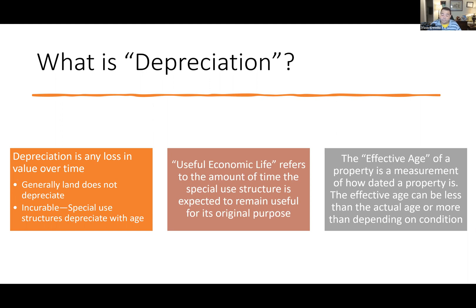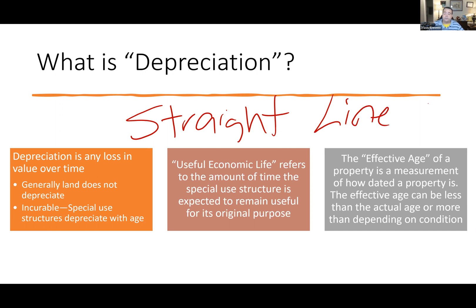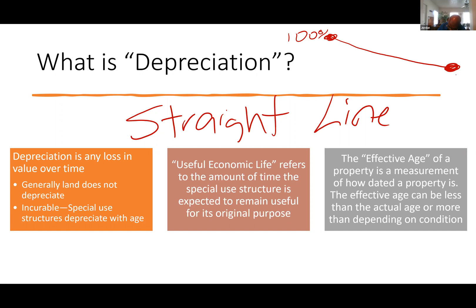Depreciation is based on two factors: the condition of the property and the age of the property. Both have a dramatic impact on depreciation. The kind of depreciation we use is called straight-line depreciation. We assume the value of the structure starts at 100% on day one and over time goes straight down to zero. That's what straight-line depreciation means.